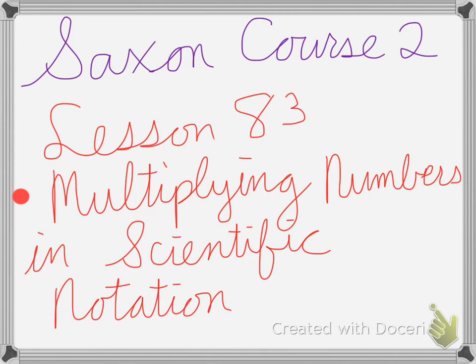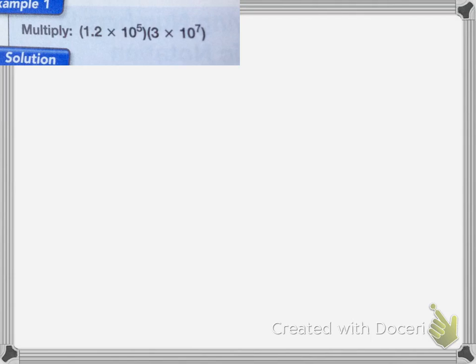Saxon Course 2 Lesson 83 is on multiplying numbers in scientific notation. When you multiply powers of 10, you add the exponents. So when you multiply numbers that have the same base, you add the exponents.